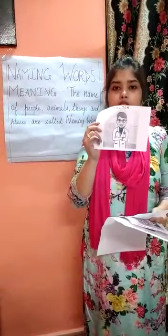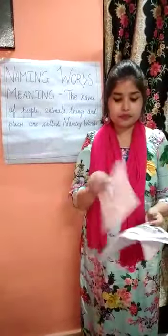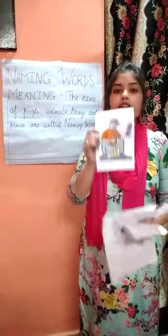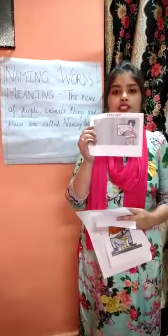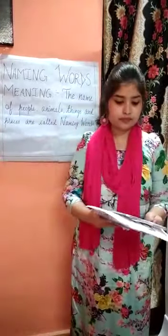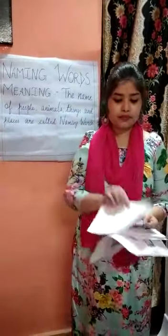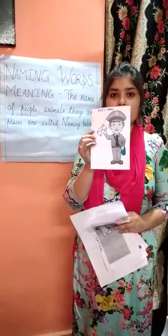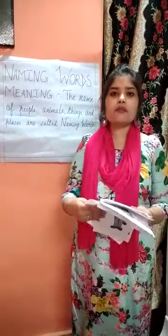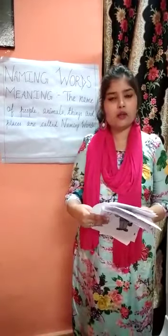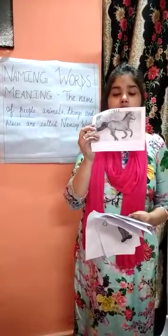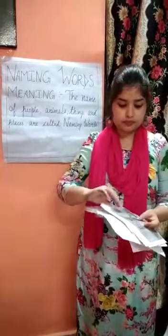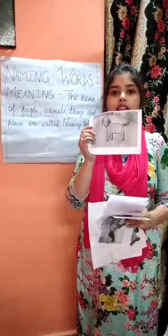For example, here are some people: he is a doctor, he is a cobbler, she is a teacher, and he is a postman. These are examples of people around us. Likewise, there are different animals — this is a horse, this is a dog, and this is a tiger.